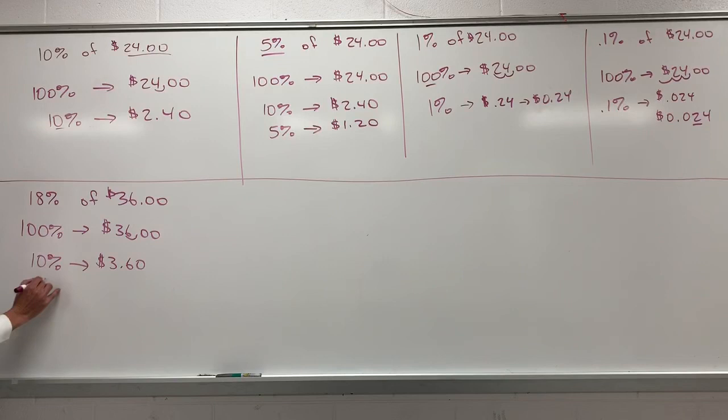Next, we find 5%. To find 5% of $3.60 is to take half of $3.60. Because 10% is $3.60, 5% will be half of that, which is $1.80.